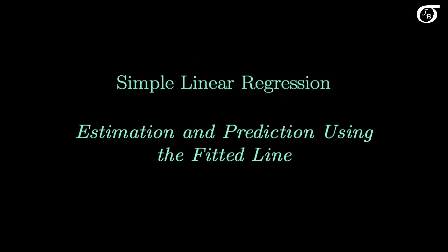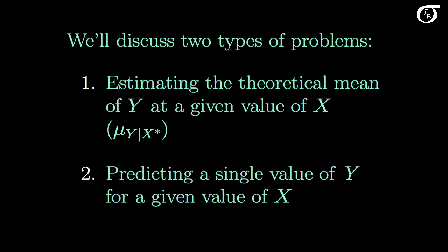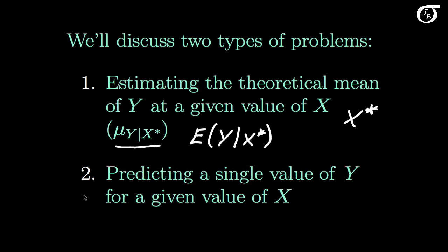Let's talk about estimation and prediction using the fitted line in simple linear regression. We're going to discuss two types of problems. First, estimating the theoretical mean of y at a given value of x — some value of x that is of interest to us, which I'll call x star. The other type of problem is predicting a single value of y for that given x star value. Which one we use in practice depends on the question of interest in a given setting.